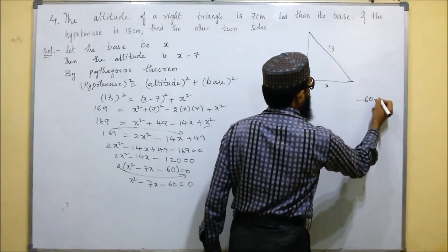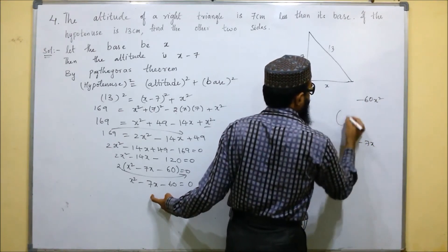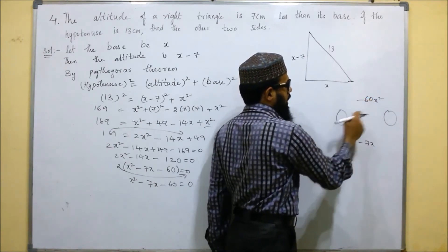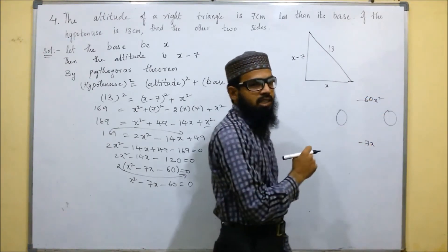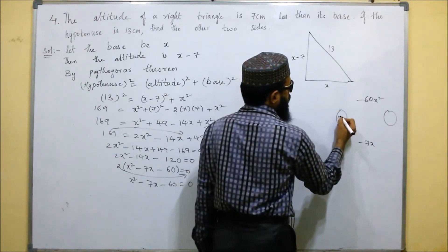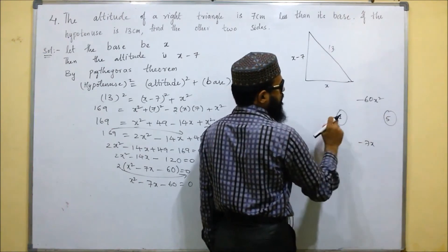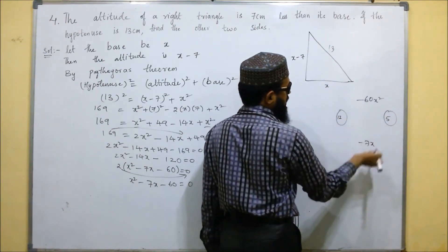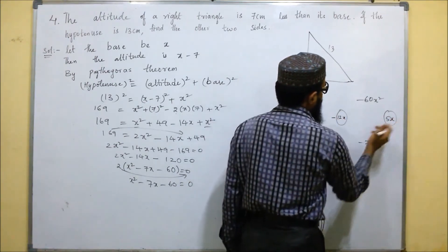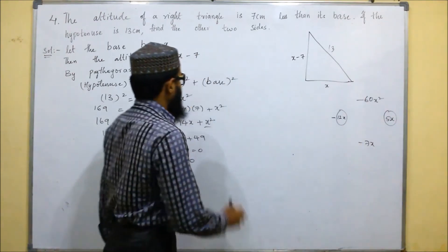Now we need to factor x squared minus 7x minus 60. Multiplying first and last gives minus 60x squared, and the middle term is minus 7x. We need two numbers that multiply to 60 and subtract to give 7. Those numbers are 12 and 5. Since the sign is negative, we write minus 12x plus 5x in place of minus 7x.